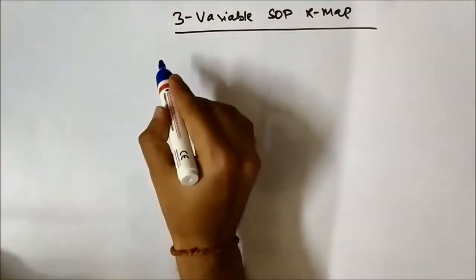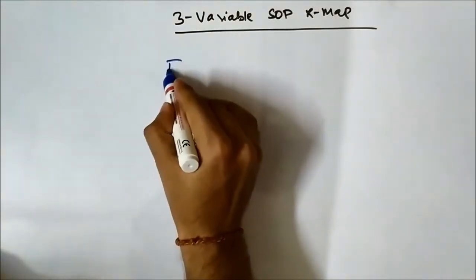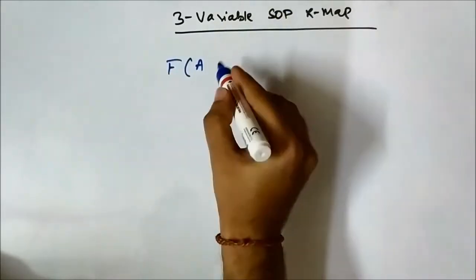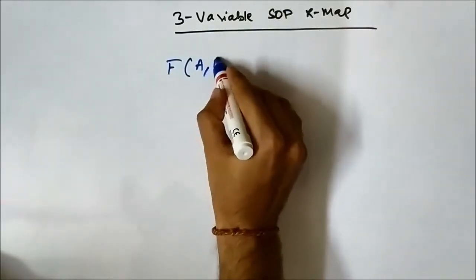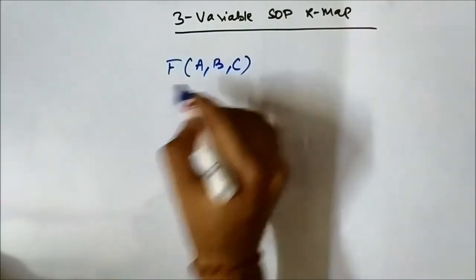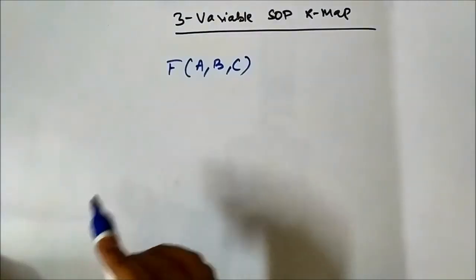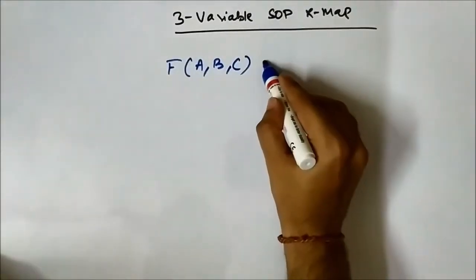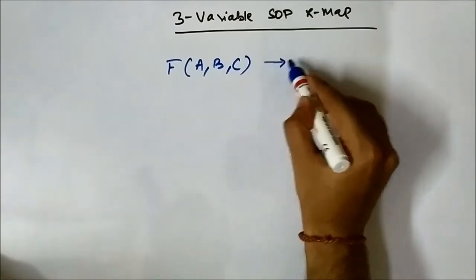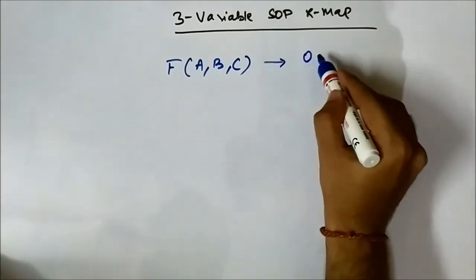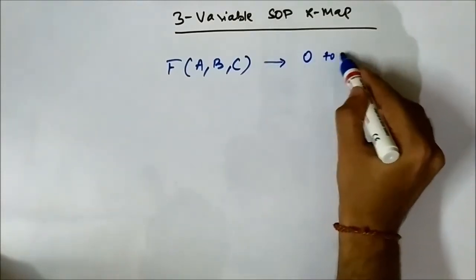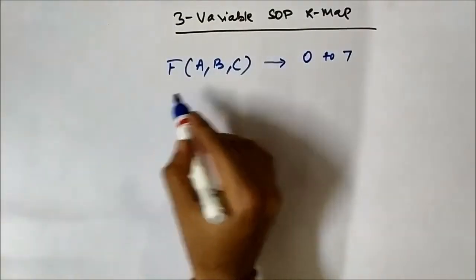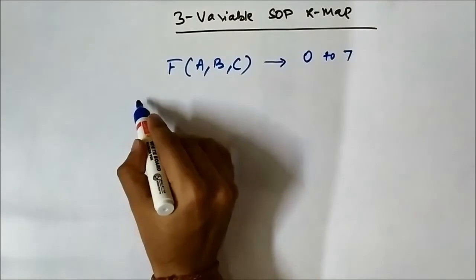The three-variable K-map will involve a three-variable Boolean expression. Let us take the three variables as A, B, C. Using three variables we can represent decimal values from 0 to 7: 0, 1, 2, 3, 4, 5, 6, 7.